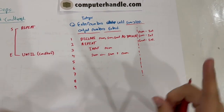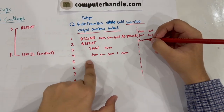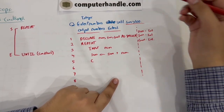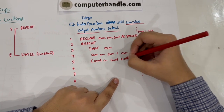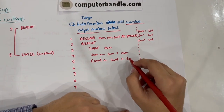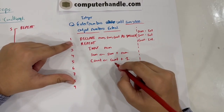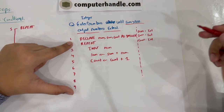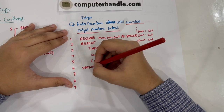One thing I nearly forgot: we need to output the number of entries entered. So before we write 'until', we need a line to count how many times the loop has repeated. The way we do this is: count = count + 1. Initially count is zero, so the first time through it becomes one, then two, and so on.